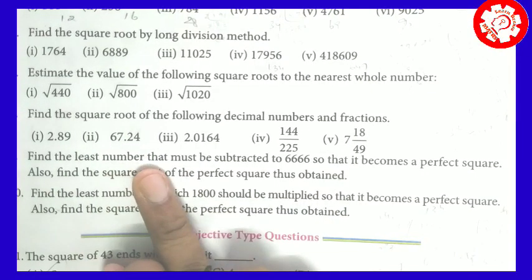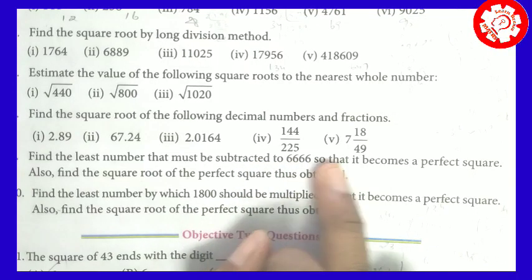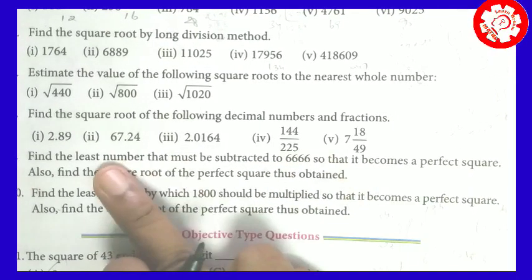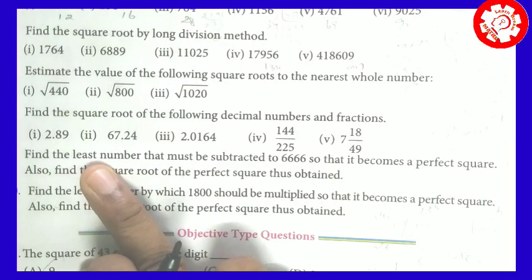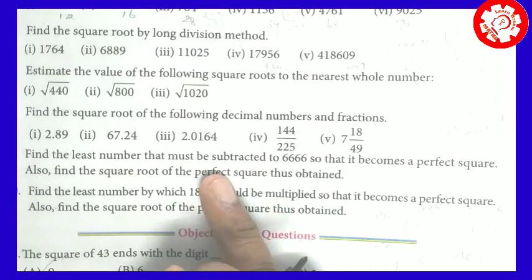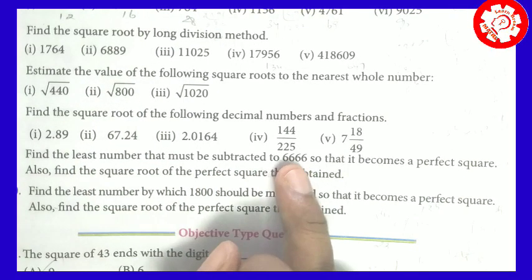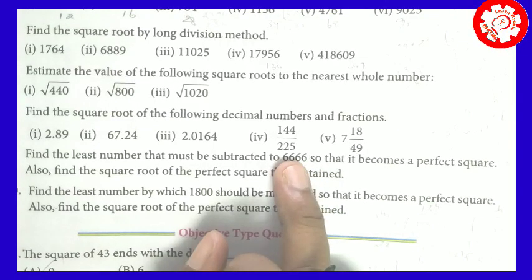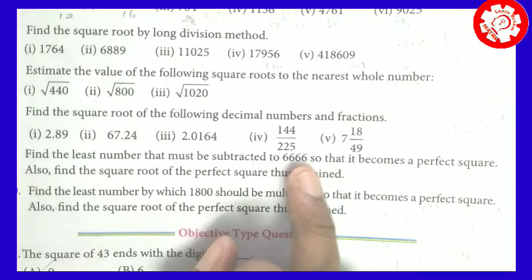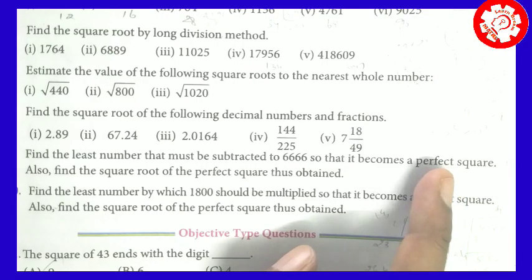Find the least number that must be subtracted from 6666 so that it becomes a perfect square. This is the least and smallest number. In 6666, 105 is the remainder to subtract. That gives the perfect square.